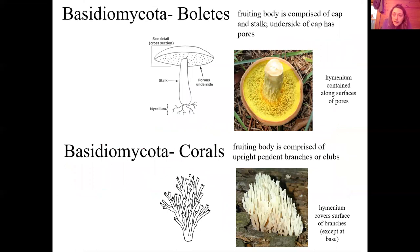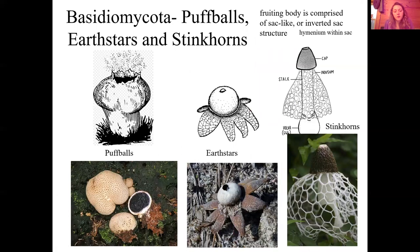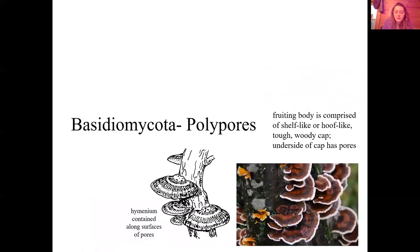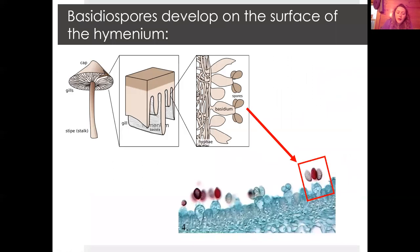In boletes, the hymenium is contained along the surface of the pores. In corals, it covers the upright branches except at the very base. In puffballs, earth stars, and stinkhorns, it's like an inverted sack — the hymenium is on the inner layer. In tooth fungi, it's on the surfaces of the teeth. In a traditional mushroom it runs along the surface of the gills. The location of the hymenium is important across the different groups.